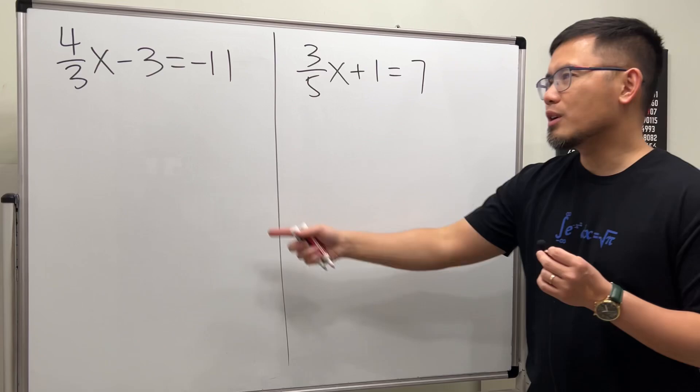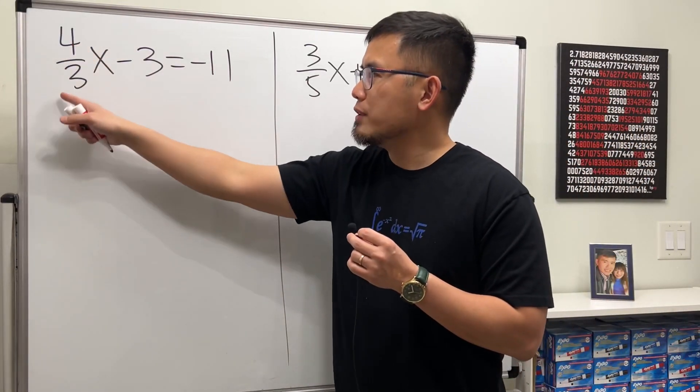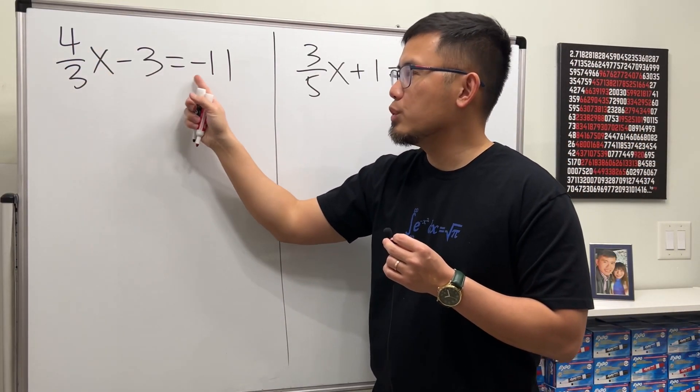We are solving these two equations. Notice that they have fractions. Let's start with the first one: we have 4/3 times x minus 3 equals negative 11.